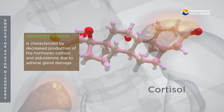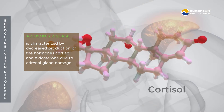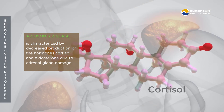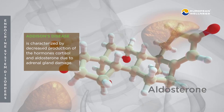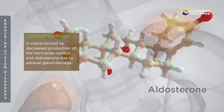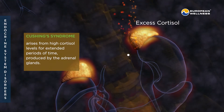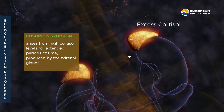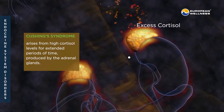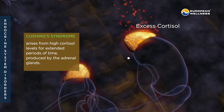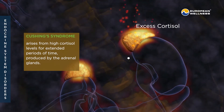Addison's disease is characterized by decreased production of the hormones cortisol and aldosterone due to adrenal gland damage. Cushing's syndrome arises from high cortisol levels for extended periods of time produced by the adrenal glands.